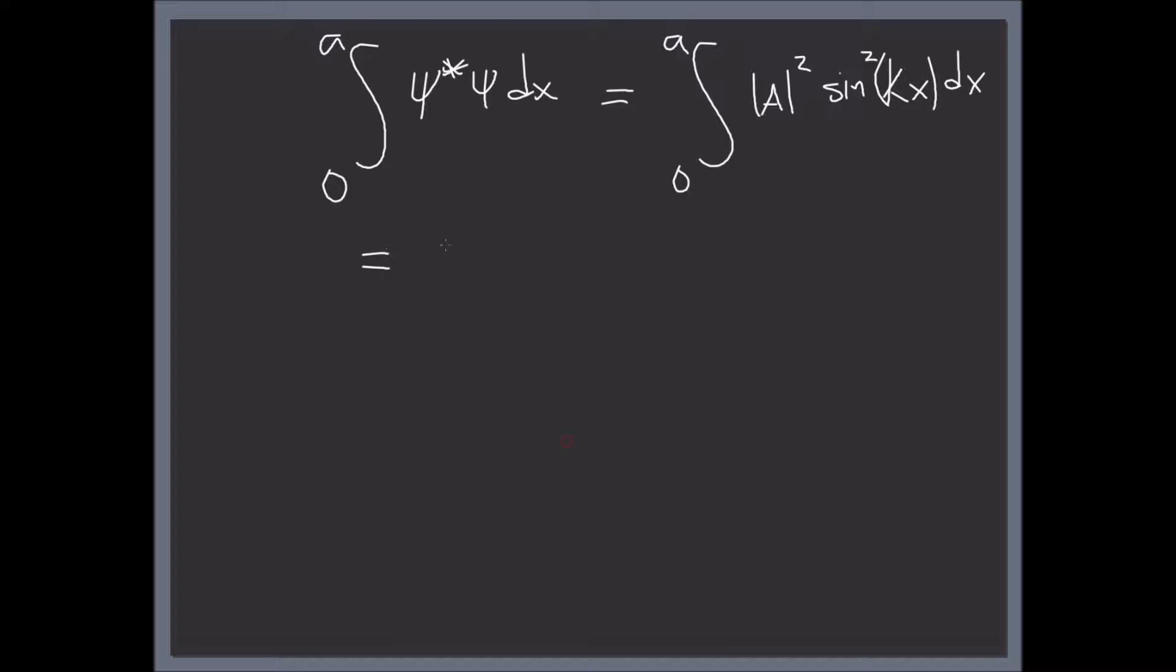Which is equal to the magnitude of A squared times a divided by 2, and this has to be equal to 1, which leaves us: A, the normalization constant, is equal to square root of 2 divided by a.